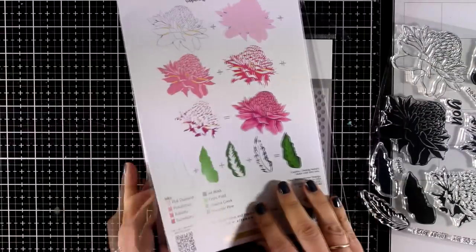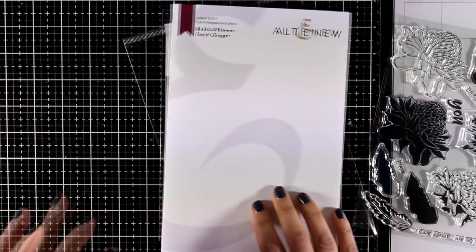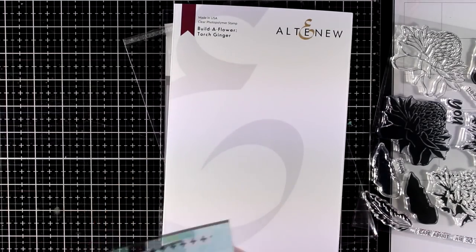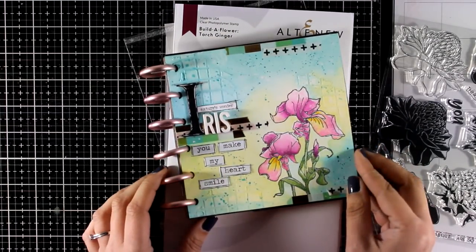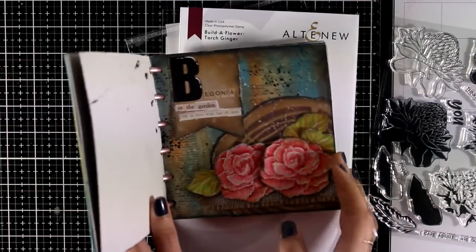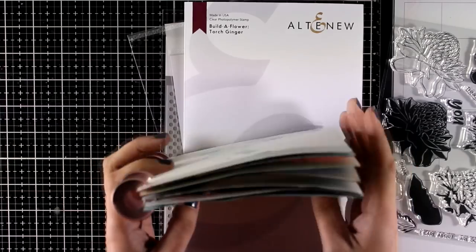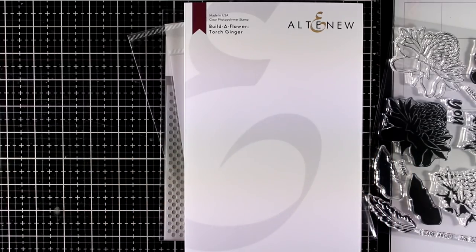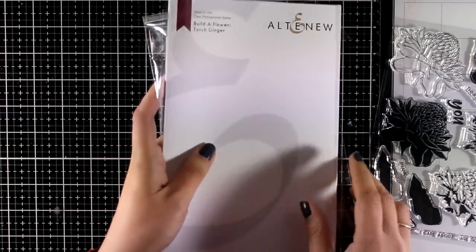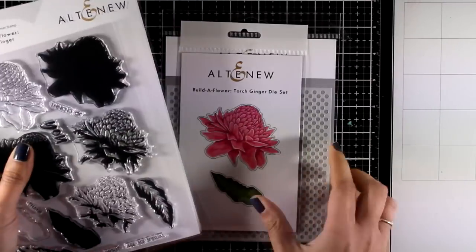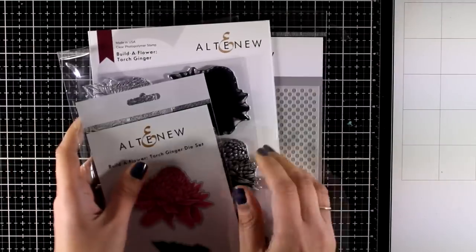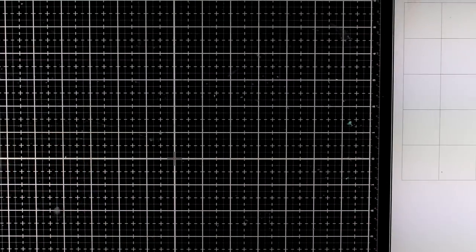For my project today I decided to create a new page for my alphabet flower journal. Whenever Altenew comes up with a new flower stamp set that I don't have a letter for, I grab the opportunity to make a page. I am determined to finish it off this year.